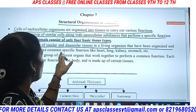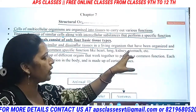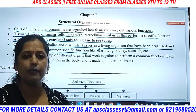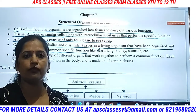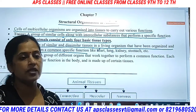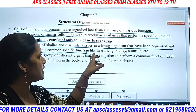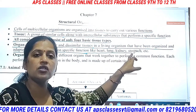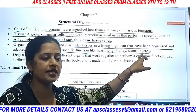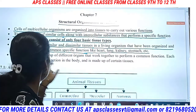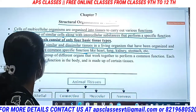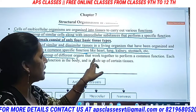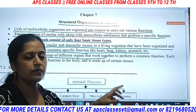Examples of organs include the heart, lungs, kidneys, and stomach. An organ system is a group of different organs that work together to perform a specific function in the body.